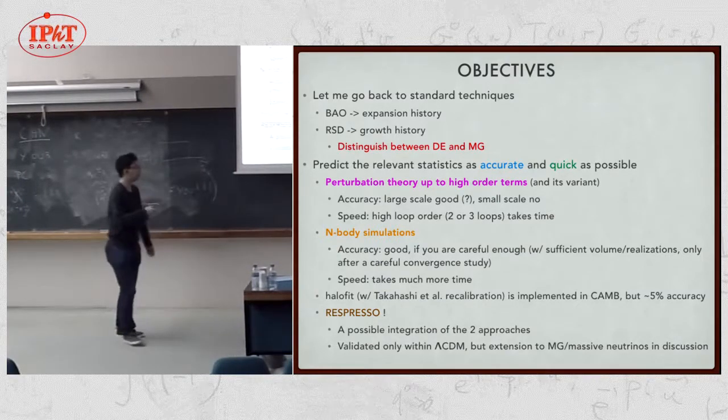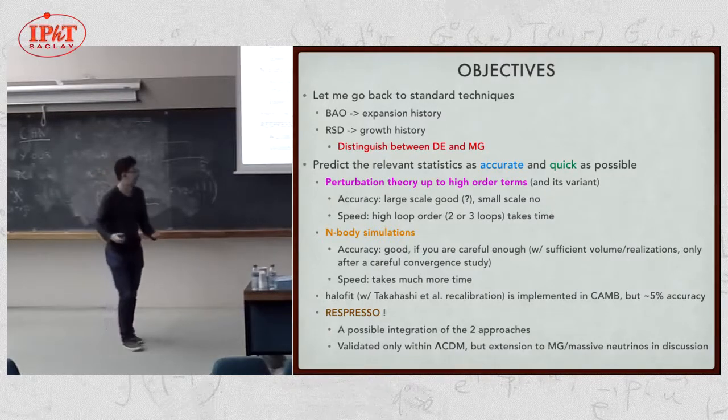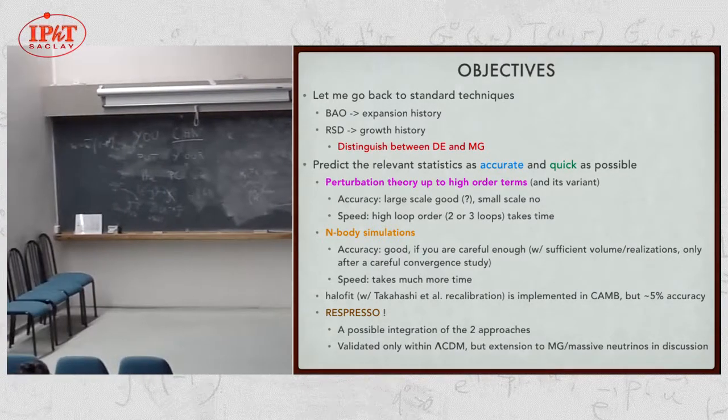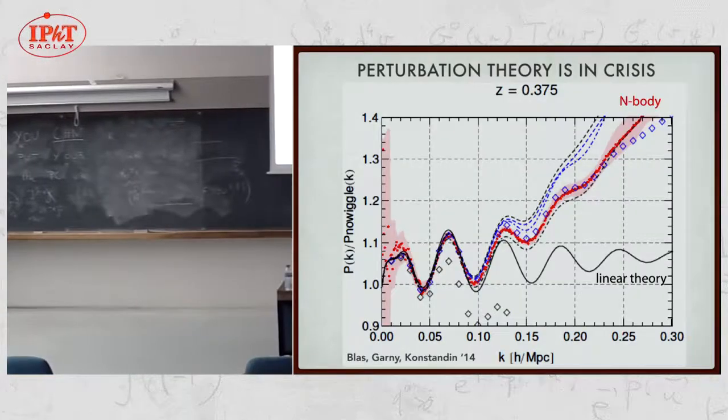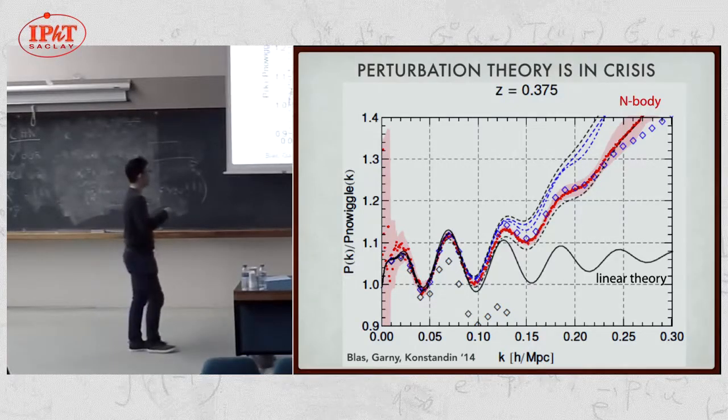Honestly, this new version of halo fit model is still not so accurate. Accuracy is typically 5%. So we want to do better. At the end of this talk, I would like to present our new way to predict nonlinear evolution. So, stay tuned. What is the situation? I took this nice plot from Diego's paper.